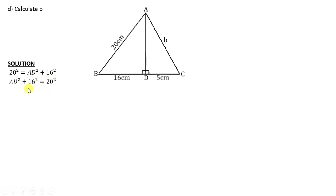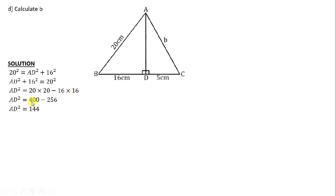We swap them: AD squared plus 16 squared is equals to 20 squared. We transpose the positive 16 squared — it will become a negative. So we are saying 20 times 20 minus 16 times 16. Multiply 20 by itself twice you get 400; multiply 16 by itself twice you get 256. Subtract 400 minus 256 to get 144. We introduce the square root on both sides. Which number multiplied by itself twice gives 144? 12. So AD is equals to 12 centimeters. When you find that third length, substitute it to find the unknown.